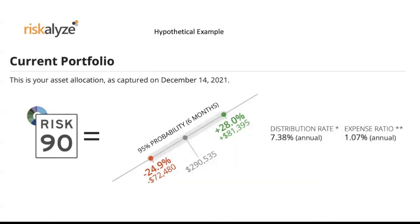Here's a hypothetical portfolio running at a risk number of 90. The distribution rate and expense ratio are pretty good, but look at the swing on $290,000 — it could go up $81,000 over a six-month period, or it could lose $72,000. This is with 95 percent probability. We take the holdings, put them in the calculator, it goes back through all this historical data, and through the algorithm projects this. It is a moving target. When I show this to clients and say 'this is what you have — is that what you want?' — if we can find strategies to reduce this risk and slow the speed of this vehicle while still getting a decent, more predictable rate of return, is that something you want?